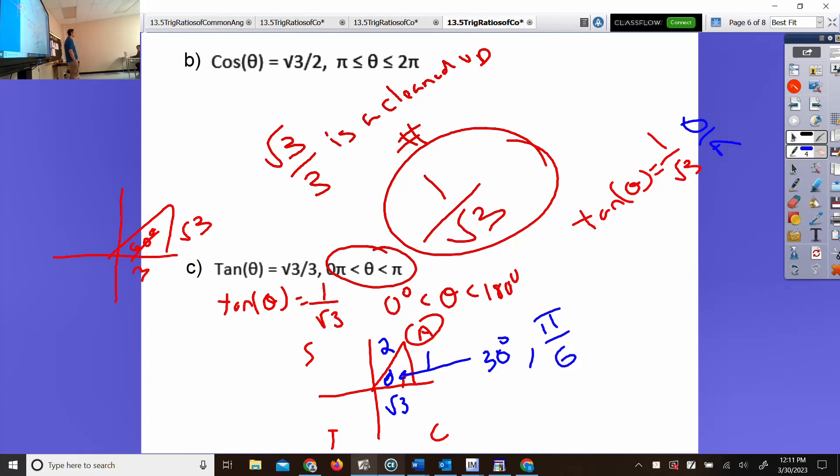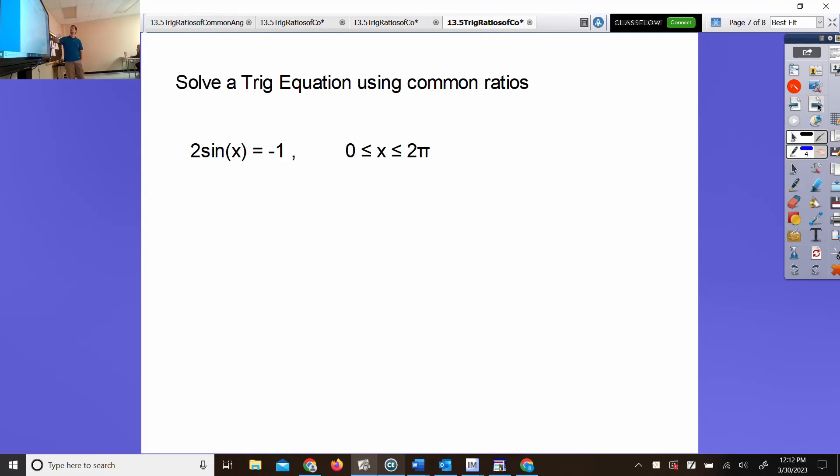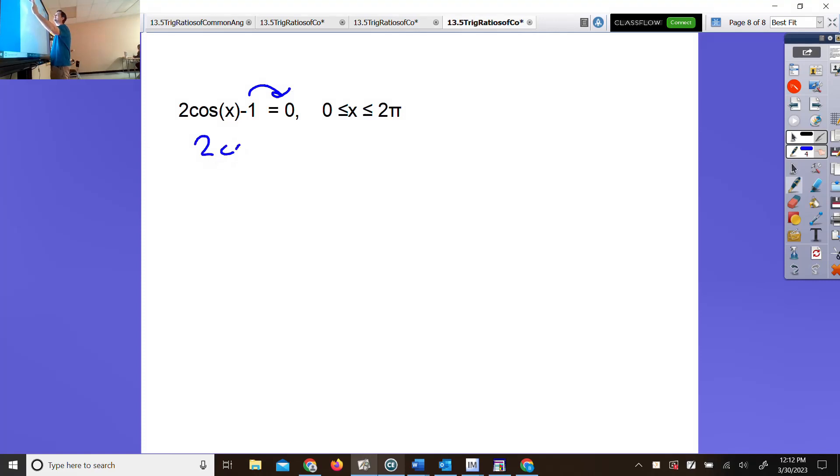Now we get to solve a trig equation. They're easy, just like in algebra 2. Solve the trig equation: 2cos(x) - 1 = 0. We've never seen trig equations, but you've seen equations most of your life. What should you do? Add 1. Move the 1 over. What else should you do? Divide by 2.